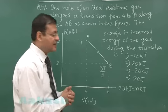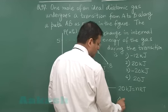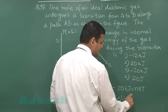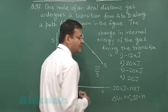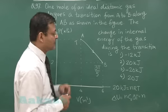Now change in internal energy is a very simple expression. Delta U is how much? Delta U is nCV delta T. Write nCV. What is CV for diatomic gas? That is 5R by 2. So that 5R by 2 you can write here.